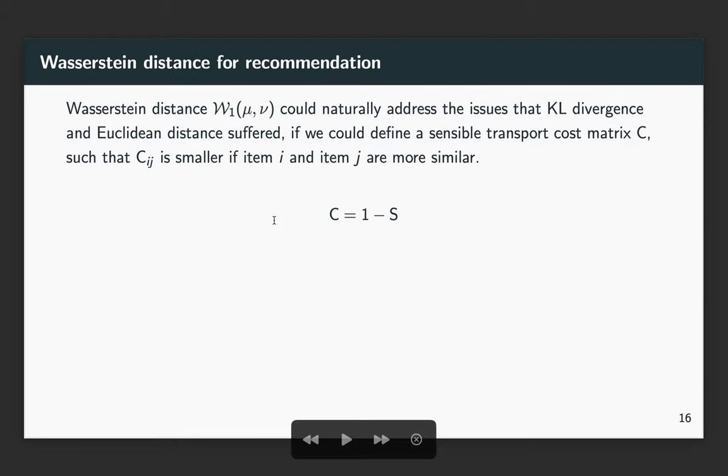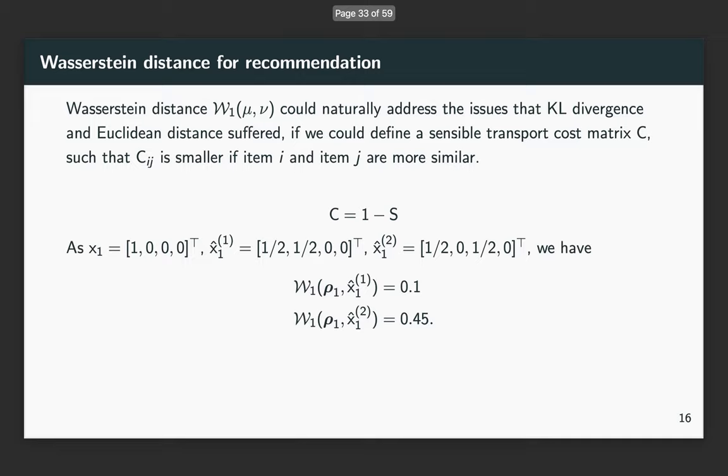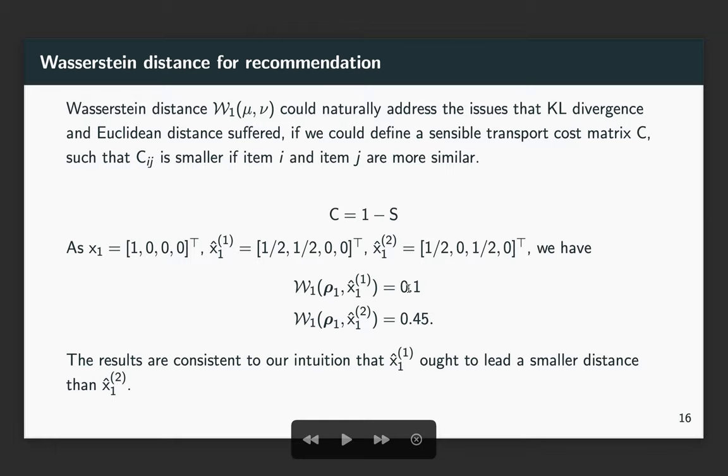If we could define the cost matrix through the item similarities matrix, then we could use the Wasserstein distance as a reasonable loss for the two outputs. This is consistent with our intuition.